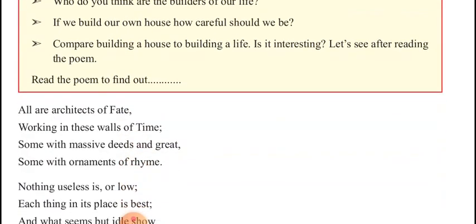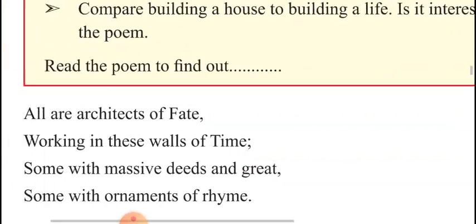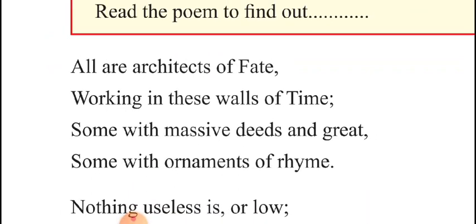Look at the first stanza: 'All are architects of fate, working in these walls of time.' These two lines are your first annotation. 'All are architects of fate' — fate here means destiny. Each and every person living on earth is the architect of their fate. Architect means builder. So every person is the builder of his fate, destiny, or his own life.